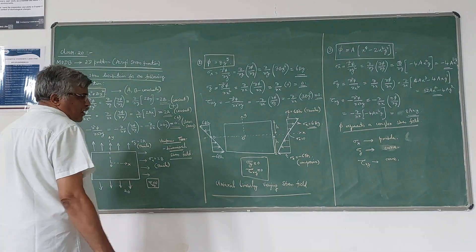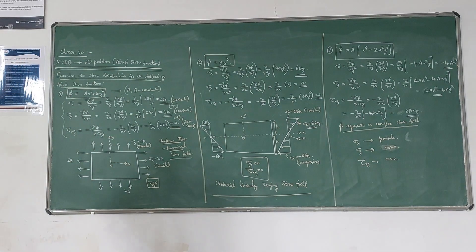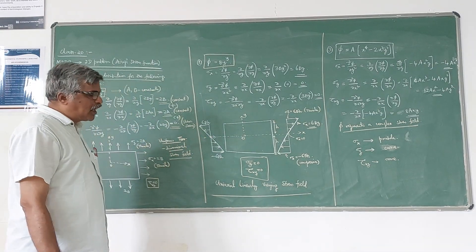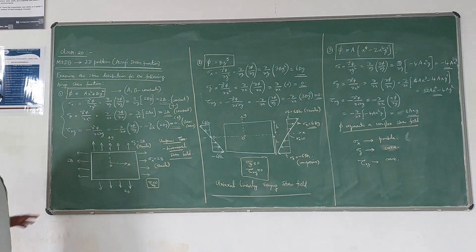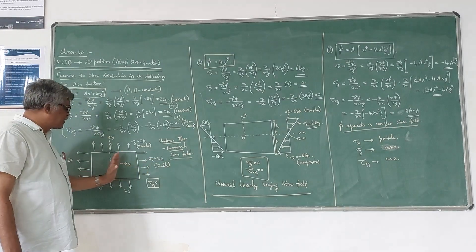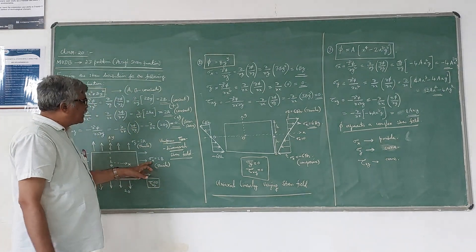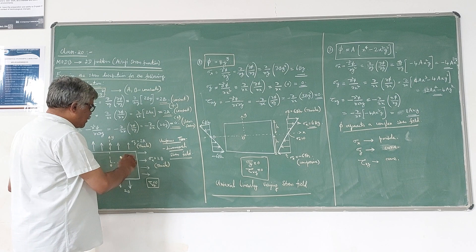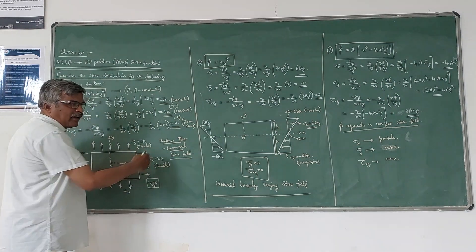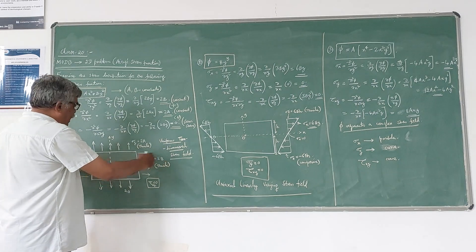Treating a and b as positive values, 2b is positive and 2a is also positive. Therefore, according to sign convention, positive values represent tensile stress. So both σx and σy represent tensile stress. Since σx = 2b is a constant, on either side of the element we show 2b as a constant tensile value.